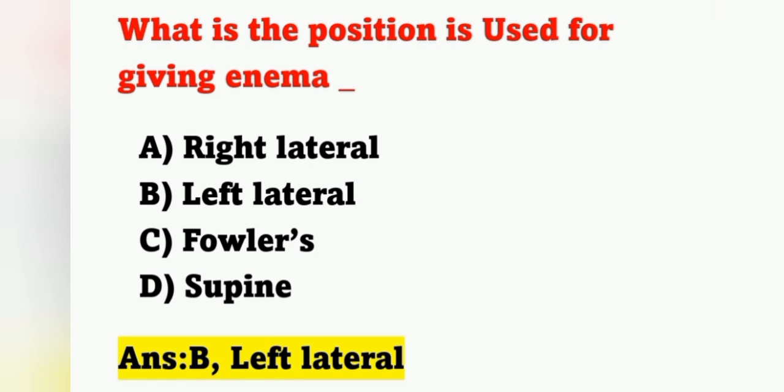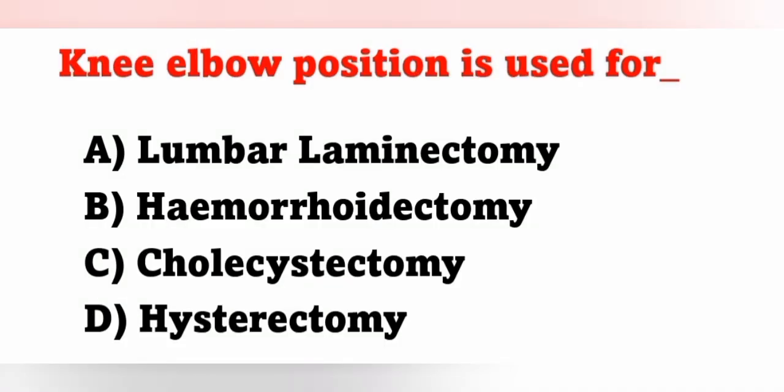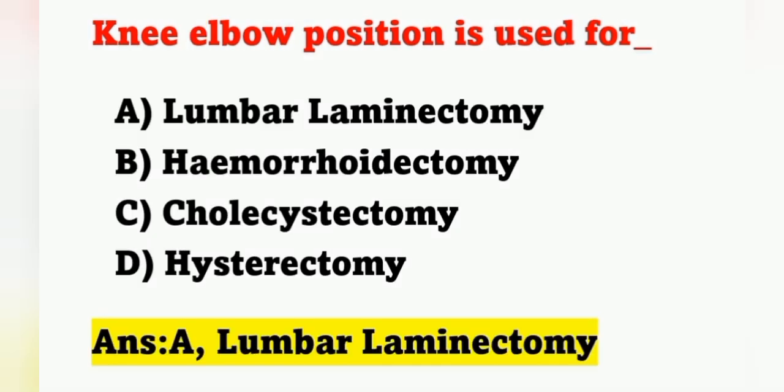Next question: knee-elbow position is used for which procedure? Option A: lumbar laminectomy. Option B: hemorrhoidectomy. Option C: cholecystectomy. Option D: hysterectomy. In the knee-elbow position, the knees are folded and come to the level of the elbows. This position is used in lumbar laminectomy. Option A is the correct answer.